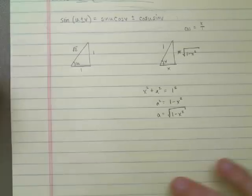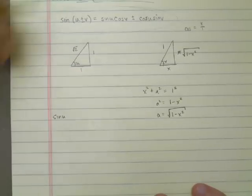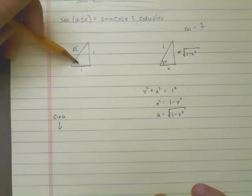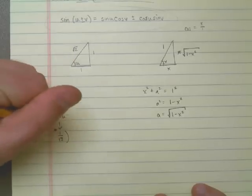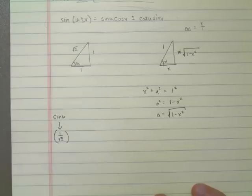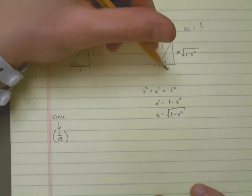So the sine of u happens to be 1 over the square root of 2. The cosine of v, which is over here, happens to be x over 1.